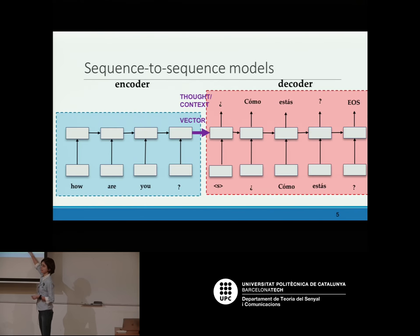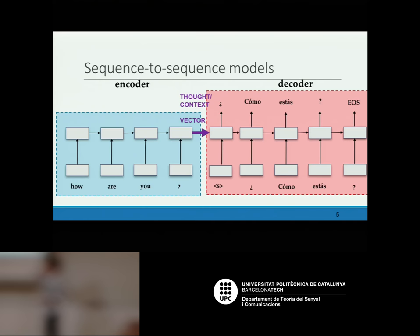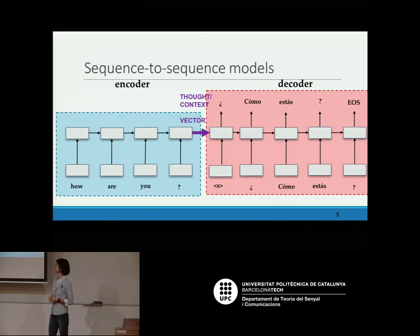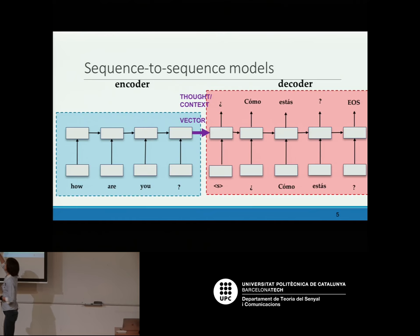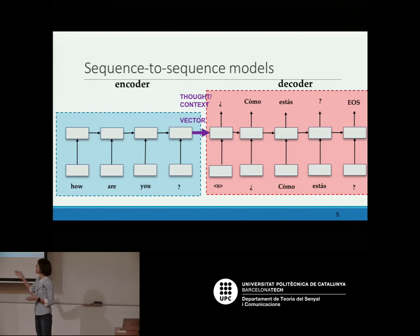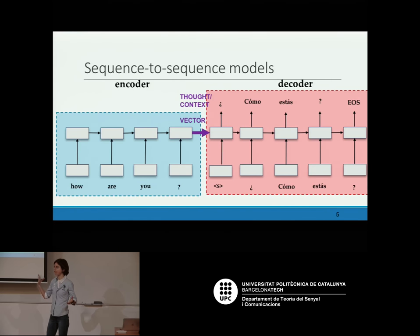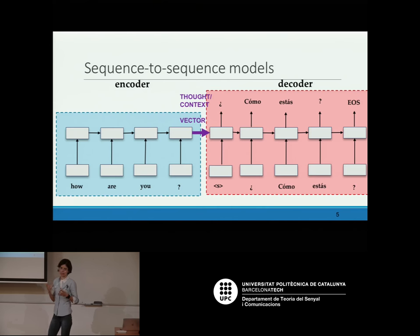These are two recurrent neural networks which are independent, so we do not require that. The problem is in the middle. The problem is that I'm assuming that no matter the input sentence length, I'm summarizing it into a single vector of the same fixed dimension. So if I have an input sequence of 50 words or 10 words it's going to be the same — all the information of the sentence is going to be squeezed into that single vector. That's the problem.